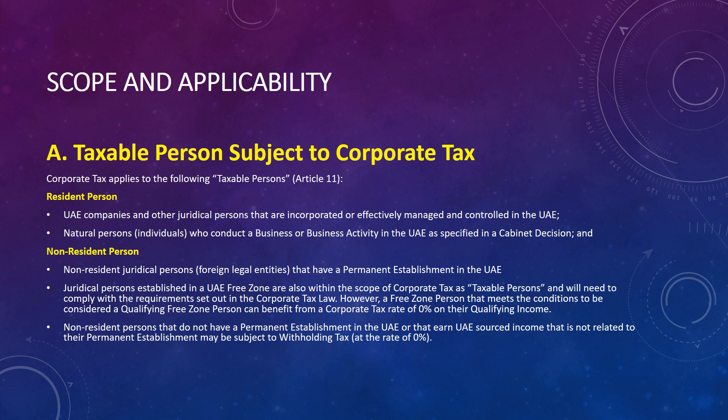In the case of non-resident persons, any non-resident juridical person — meaning companies — that have a permanent establishment in the UAE falls within scope. We will discuss permanent establishment in detail in future videos. Juridical persons established in a UAE free zone are also within the scope of corporate tax as taxable persons and will need to comply with the corporate tax law. However, free zone persons that meet the conditions to be considered a qualifying free zone person can benefit from a corporate tax rate of zero percent on their qualifying income.